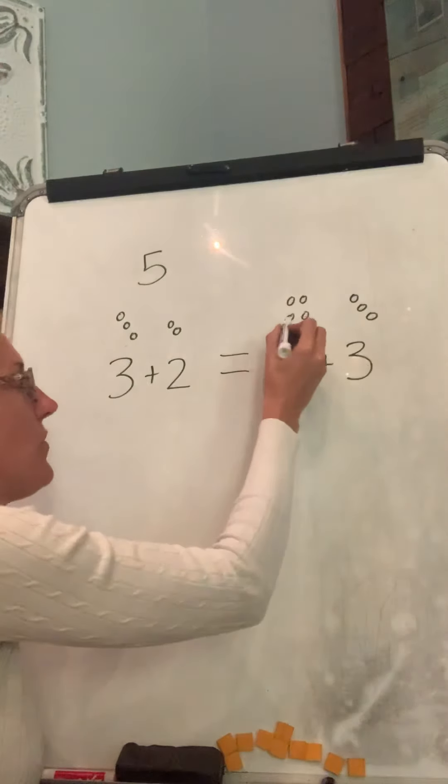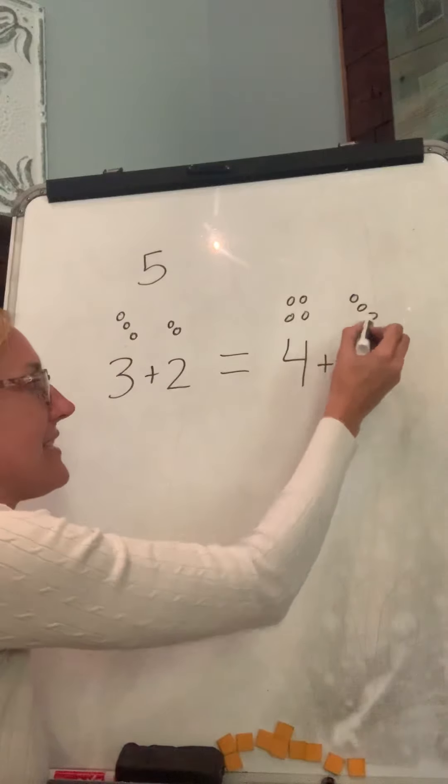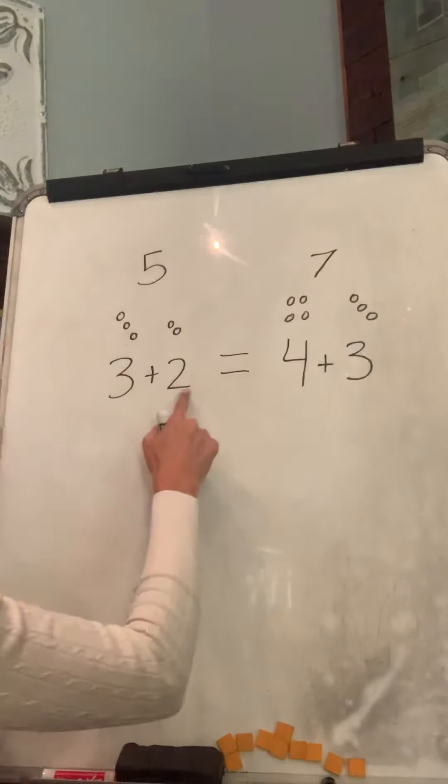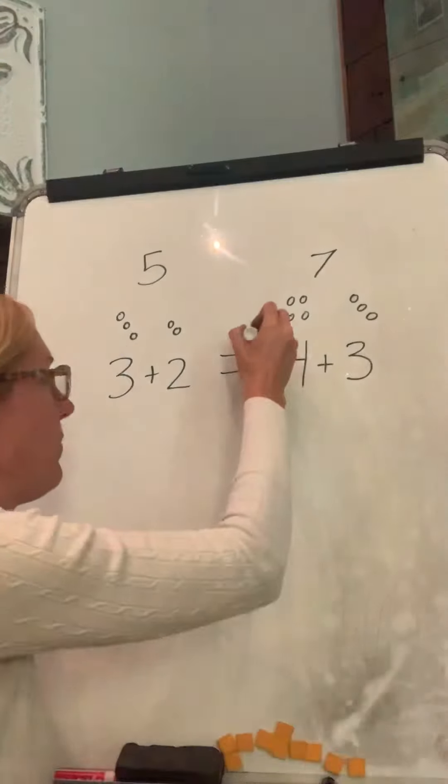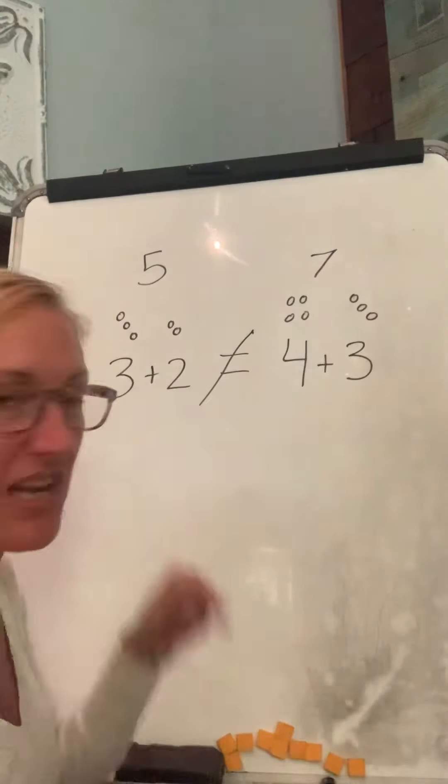One, two, three, four, five, six, seven. Uh-oh, this equals seven. So are those equal? Nope. Cross it out. That means not equal.